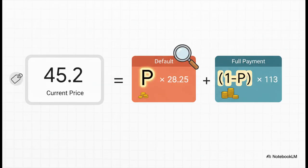Now we just plug in the numbers. We know today's price is $45.2. Let's just use the letter P for the probability of default. Now, if the chance of default is P, then the chance of not defaulting has to be 1 minus P, right? And just like that, we have one clean equation with only one thing we don't know.